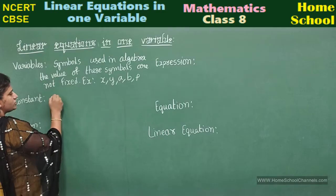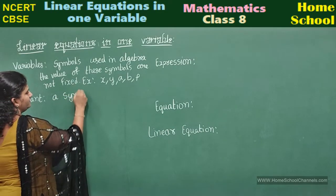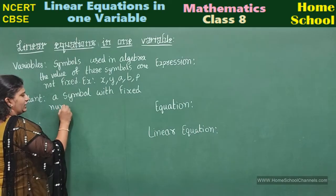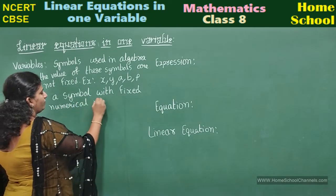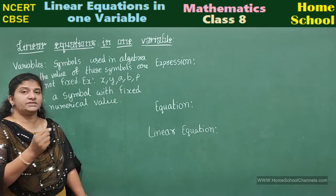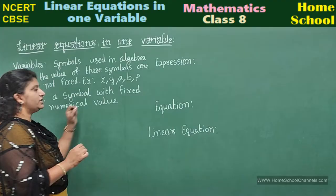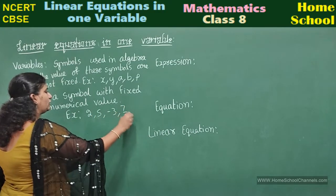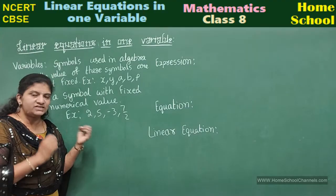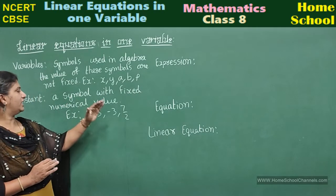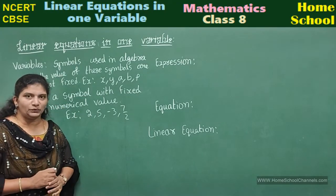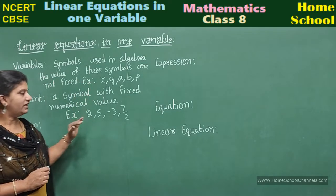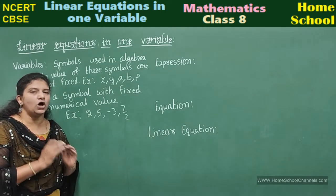Constant is also a symbol with a fixed numerical value. It is used to represent a fixed numerical value. For example, it may be 2, 5, minus 3, 7/2, or any number — the number is fixed. A constant is a symbol with a fixed numerical value, and unlike variables, this value does not vary.